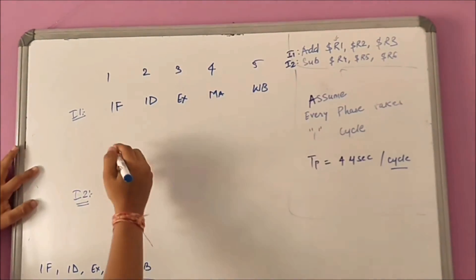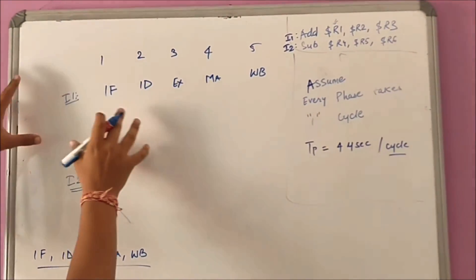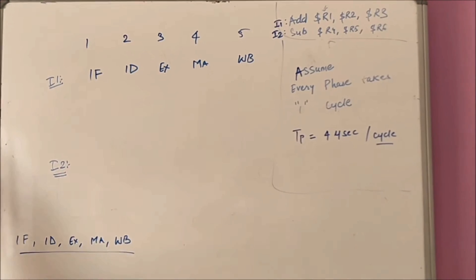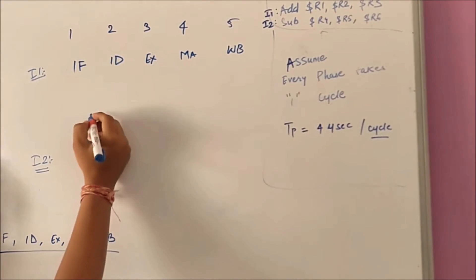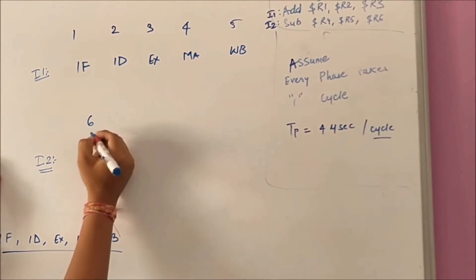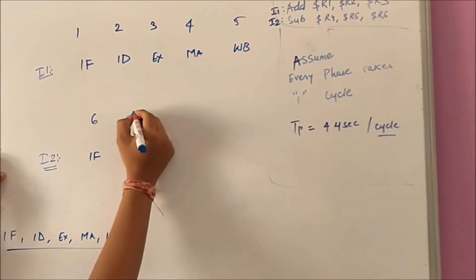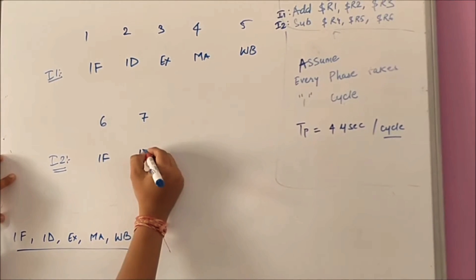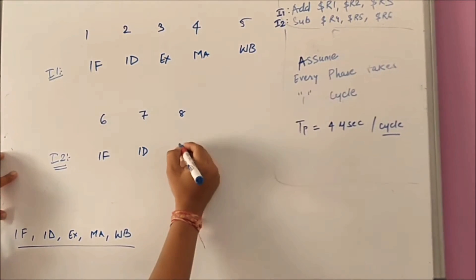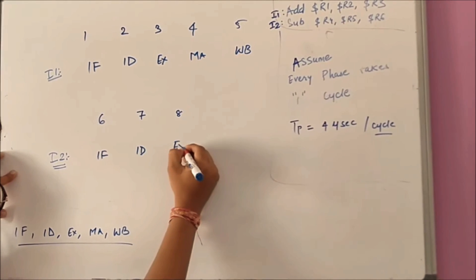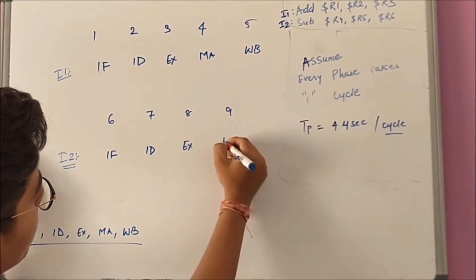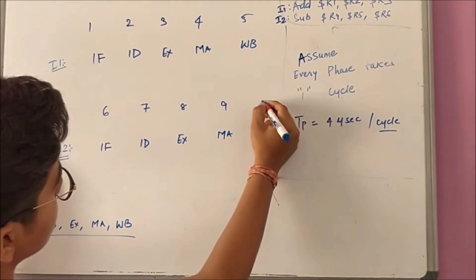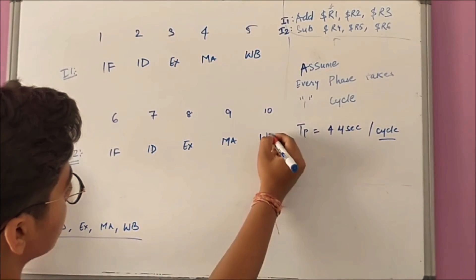Execution of I1 is over at the fifth cycle. Now for executing I2, at the sixth cycle it will be instruction fetch, seventh cycle instruction decode, eighth cycle execution, ninth cycle memory access, and tenth cycle write back.